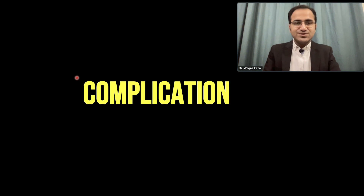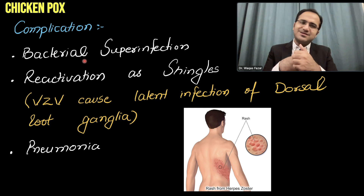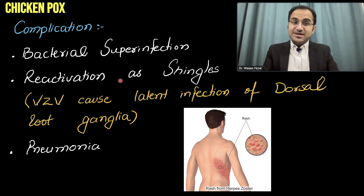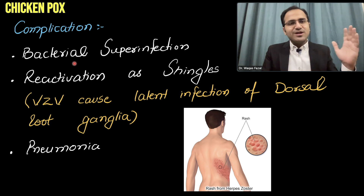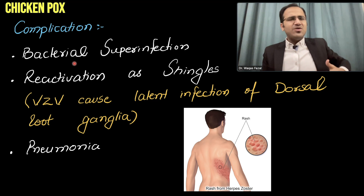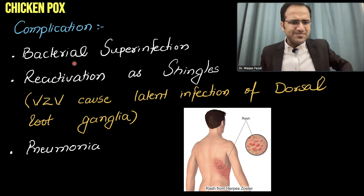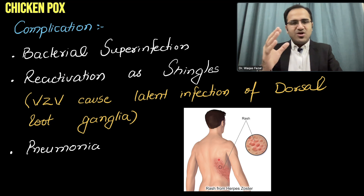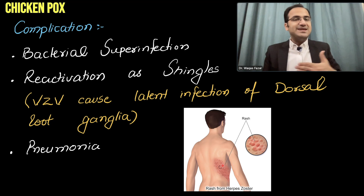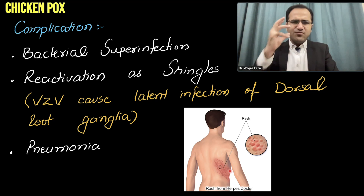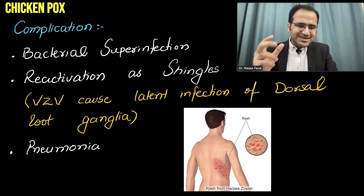Coming to the complications of varicella zoster virus infection. A very common complication is bacterial superinfection — patients scratch the wounds and don't let them erupt naturally, so bacteria infects them. Then, after many years, someone who got chickenpox in childhood may suddenly develop severe stabbing pain on a certain dermatome in their chest, with vesicular rash on that dermatome that does not cross the midline.